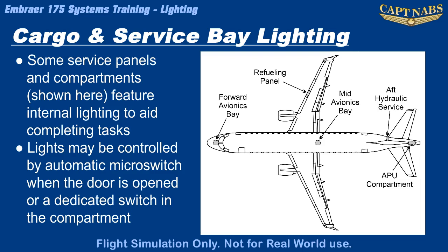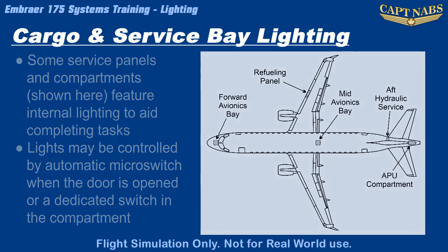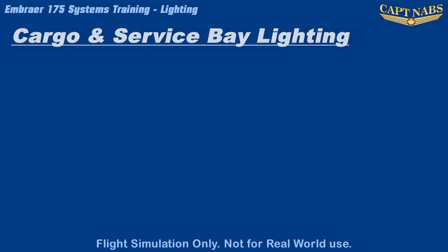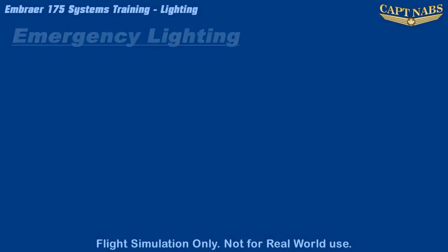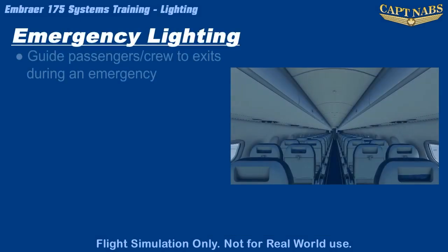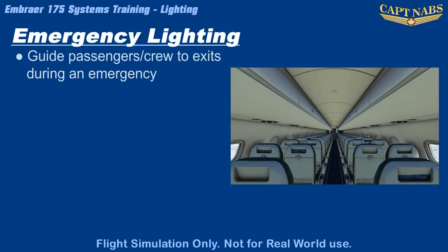Service compartment lighting is available in the refueling panel, the forward and mid electronic bays, the APU compartment, and the rear hydraulic compartment. An emergency light system is provided for the cabin and the flight deck, designed to guide passengers to the nearest exit in case of an emergency.